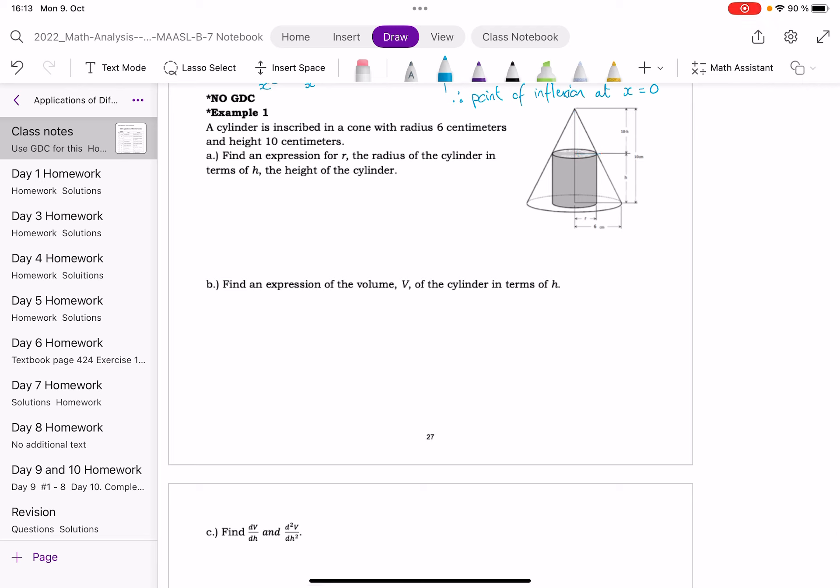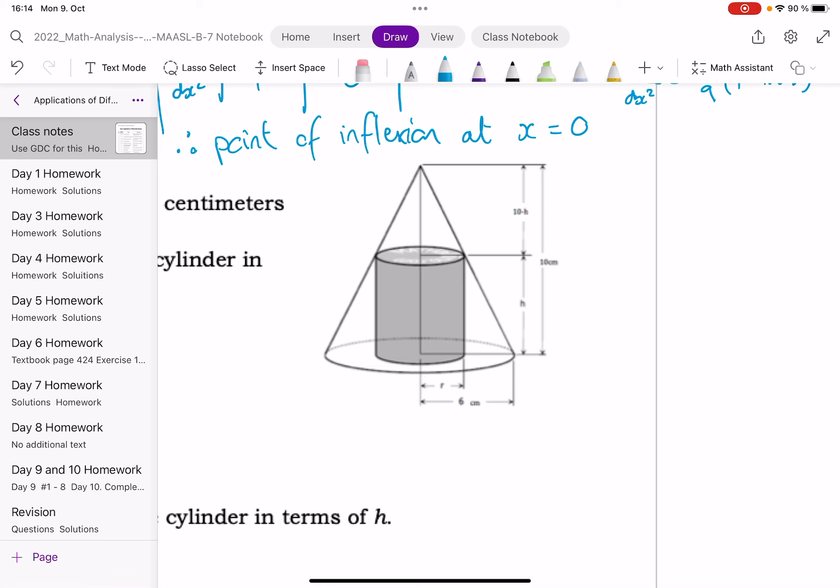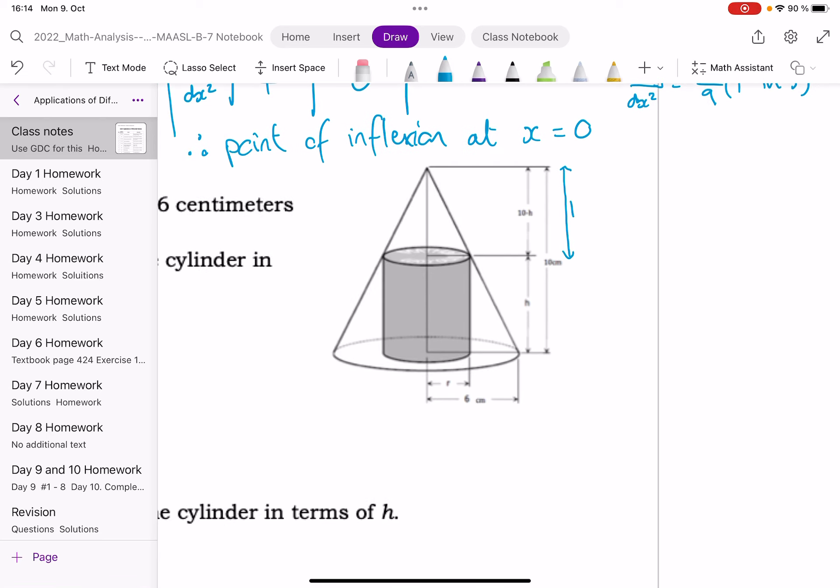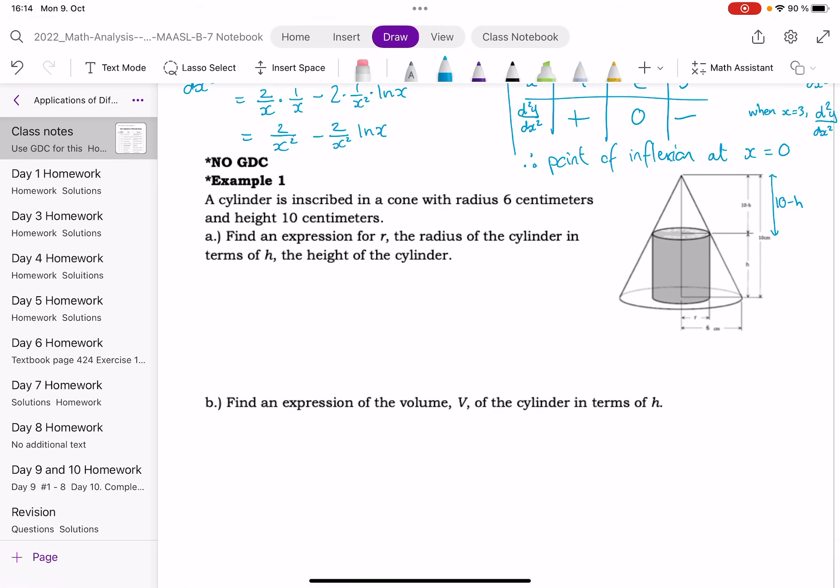This first example is a really good one to take a look at. So it's a cylinder inscribed in a cone. The cone has a radius of 6 and a height of 10. The cylinder has a radius of R and a height of H. And you might just about be able to see that they've marked in the distance between the top of the cone and the top of the cylinder as 10 minus H. So 10 was the whole cone minus H for the cylinder.